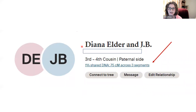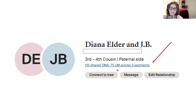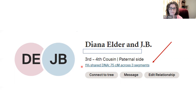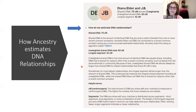Here is me and JB. Ancestry says that we share 1% DNA, 75 centimorgans across three segments. If I want to get more information about this match and a little bit more about those segments — including how big is the largest segment — I just click on that. That opens up a field telling me about the shared DNA, the unweighted shared DNA, and the longest segment.